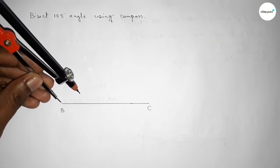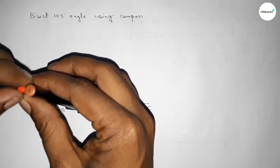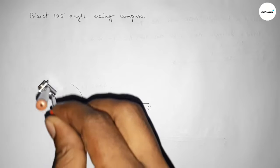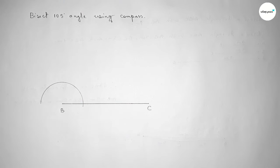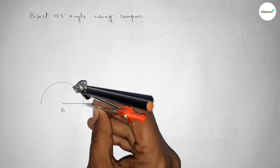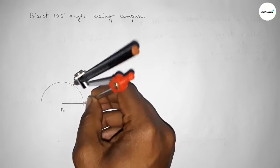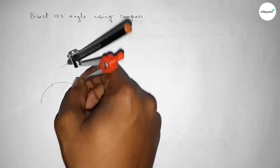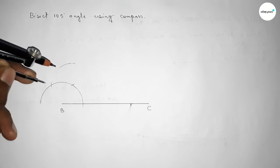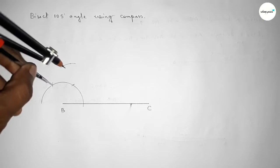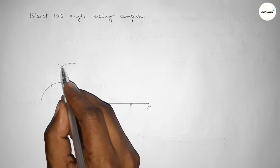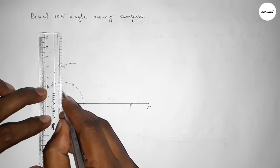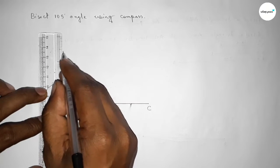Putting the compass on point B and taking any length, first we draw an arc. Again putting the compass at the same length and cut here, then putting the compass here and cut here, drawing an arc. Again with the same length, putting the compass here and cut here so both curves intersect at a point. Joining this line gives us a 90 degree angle.